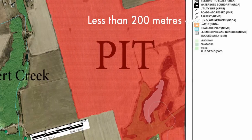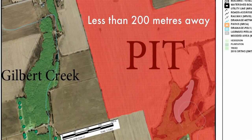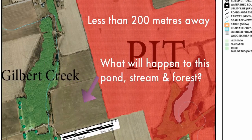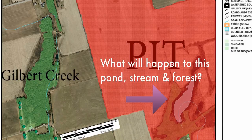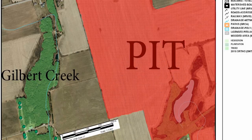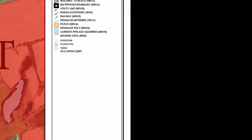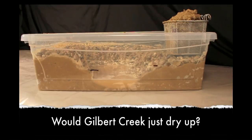The pit is less than 200 meters away from Gilbert Creek. And as well, there's another forest and a pond and a stream right on the pit lands. What's going to happen to them?